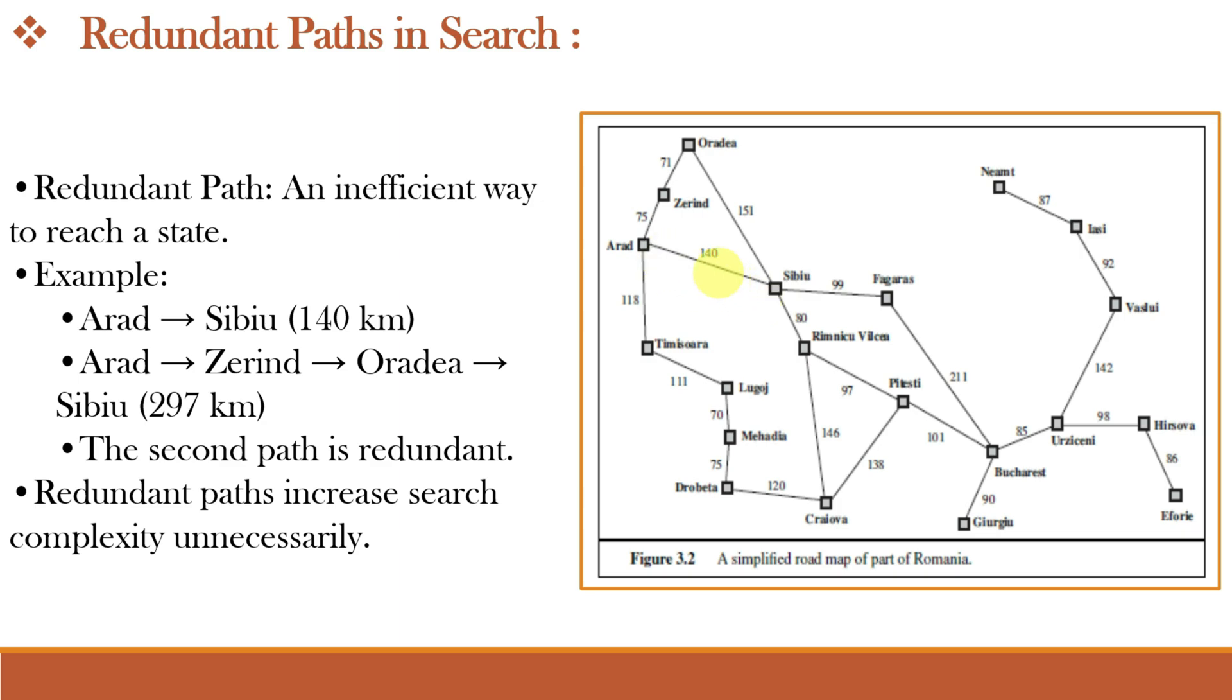If we go directly, it is 140 kilometers. But there is also a second path from Arad to Zerind to Oredia to CBU, where the total travel distance is 297 kilometers. This second path is the redundant path. These redundant paths increase the search complexity unnecessarily. Avoiding redundant paths improves efficiency and prevents unnecessary work.